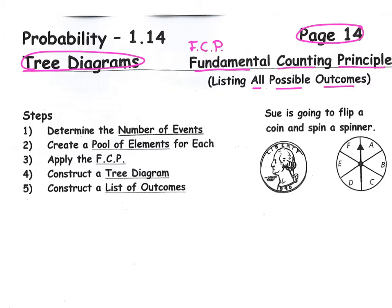Let's take a look at a situation where we might have to look at all the possible outcomes. Sue is going to flip a coin and spin a spinner. If you look at the coin, you know there are two possible outcomes. And even though we can't see tails, we know it's there. Underneath the coin, draw a little oval, and in that oval we're going to represent our pool of elements. For a coin, you could flip a heads or a tails.